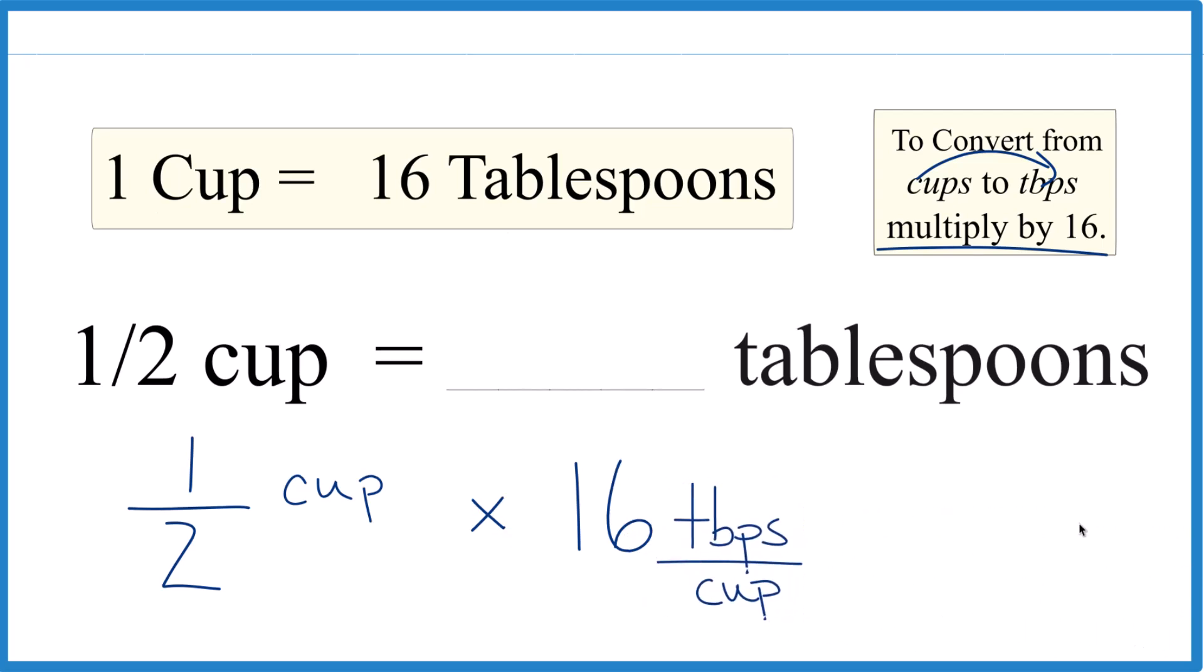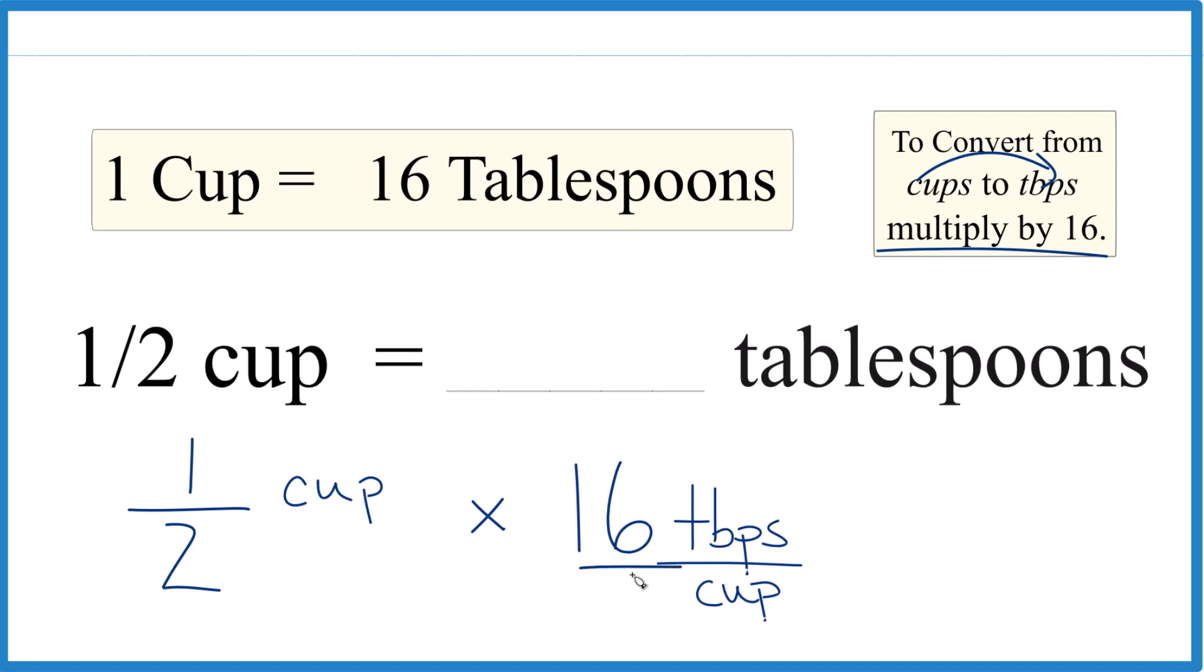And you could think about it as 16 tablespoons in one cup like that. So it's easier to multiply because one times 16, that equals 16. Two times one is two, and 16 divided by two is eight.